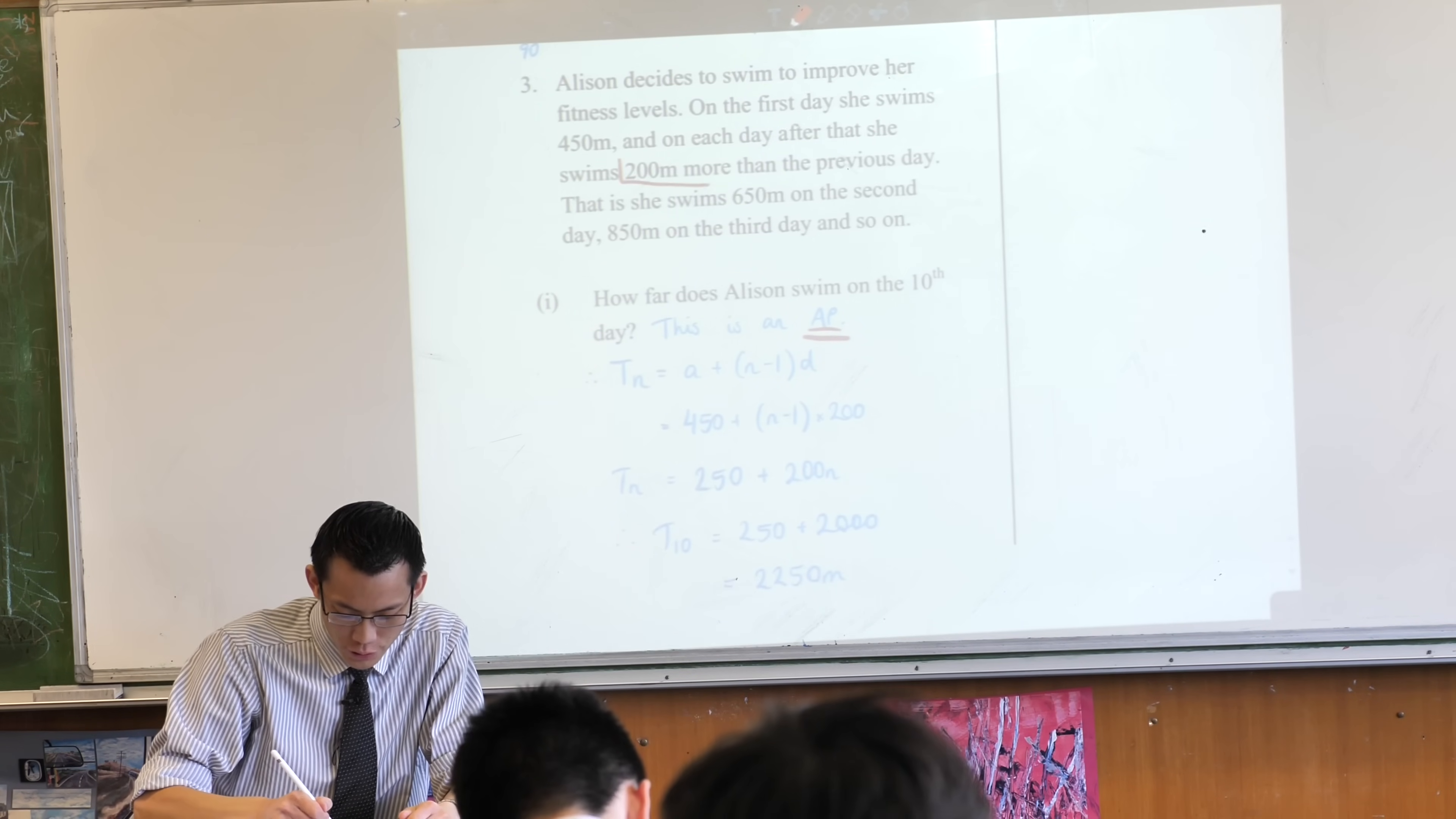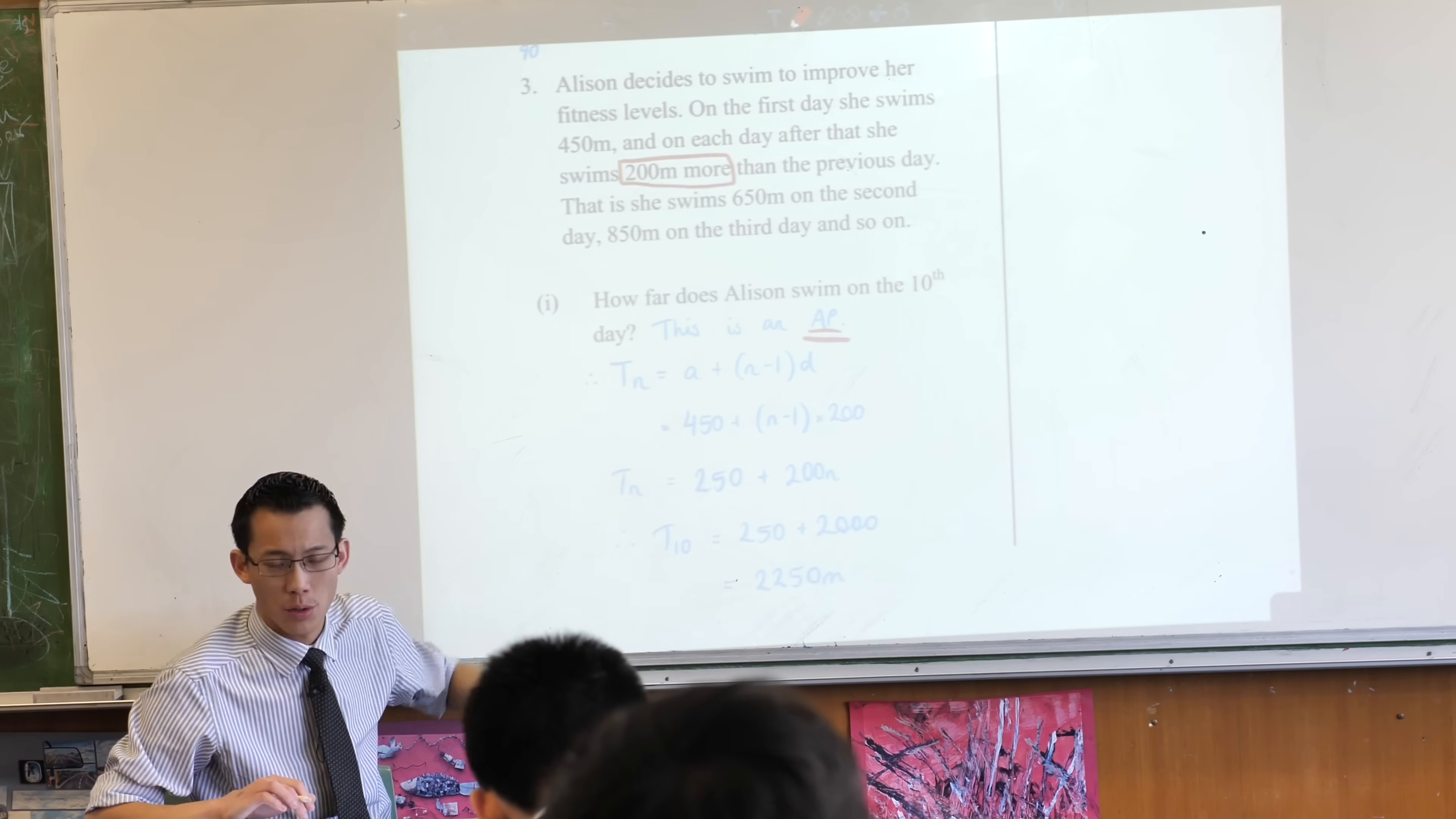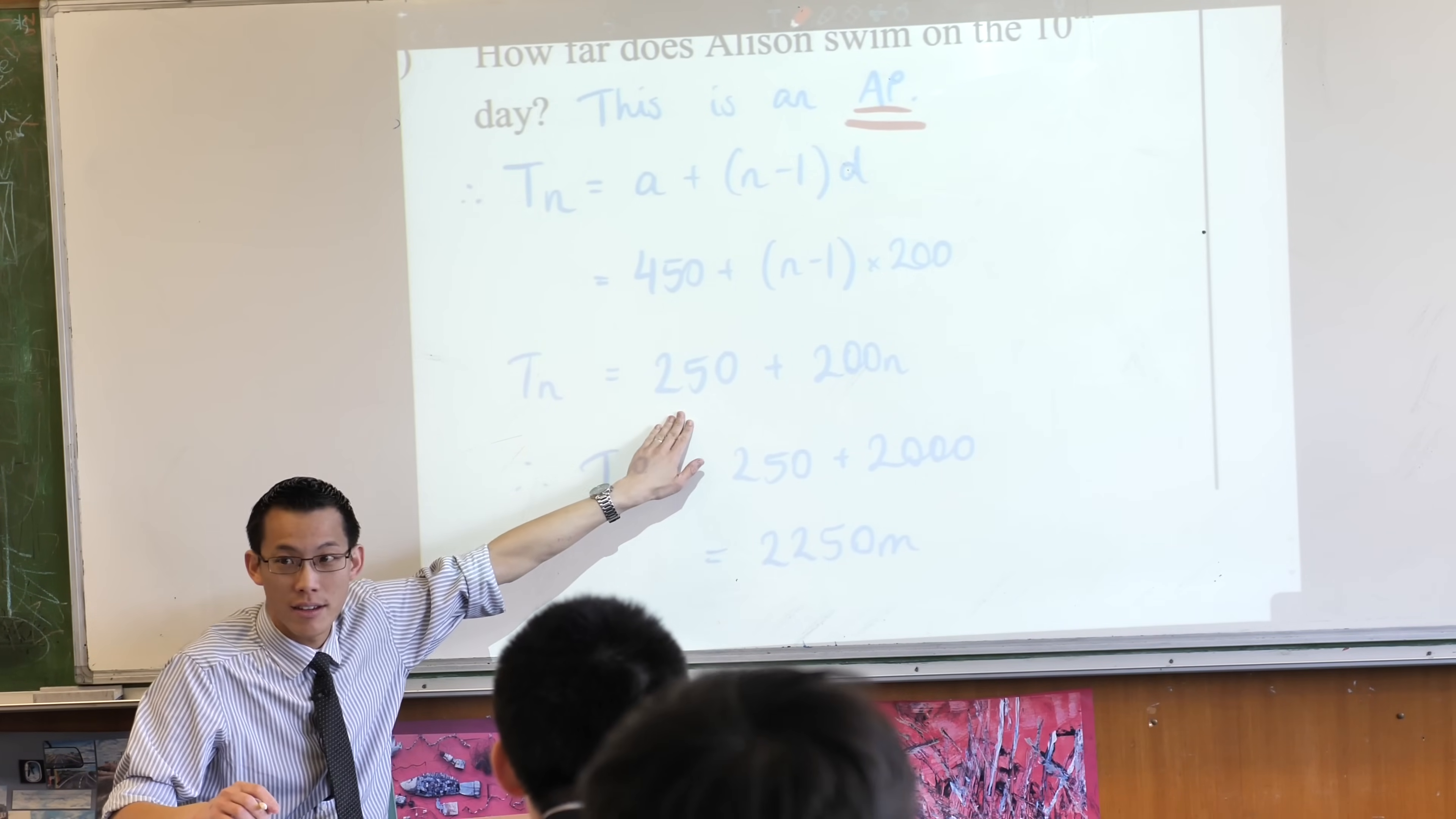Very good. 200 more indicates there's a common difference each time. She adds 200 meters to each workout, so that's what makes it an AP. How far does she swim on the 10th day? You didn't necessarily have to do it the way that I did. I came up with the expression for the nth term, and then I just substituted n equals 10. Can anyone suggest why it's probably worth it, even though it wasn't necessary, to do that in this question? Yeah?